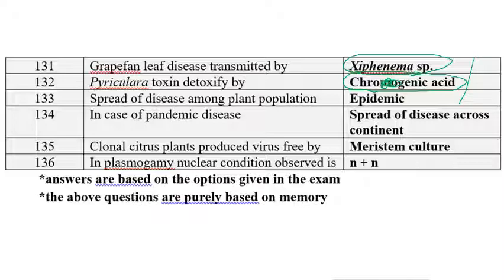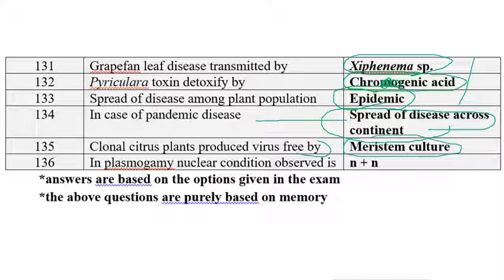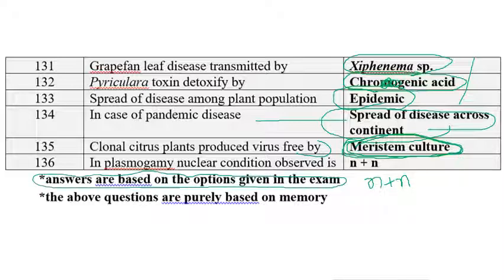Spread of disease among the plant pathogen population is known as epidemic. In case of pandemic disease, the spread is across continents — a pandemic disease is one that is ubiquitous, found everywhere in the world. Clonal citrus plants are produced virus-free by meristem tip culture. In plasmogamy, the nuclear condition is n+n, the dikaryotic condition. These are all the memory-based questions from ASRBnet 2014 NET2. Thanks to Sandhya Shivapavar for providing this question paper.